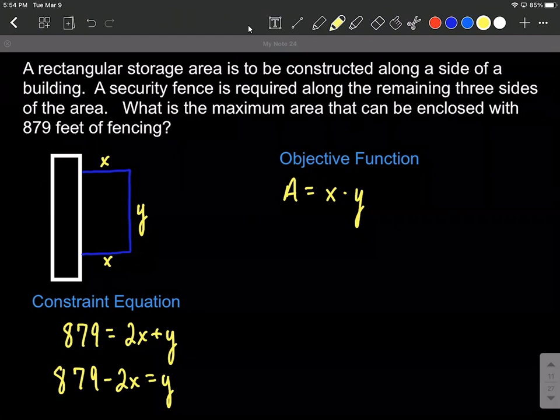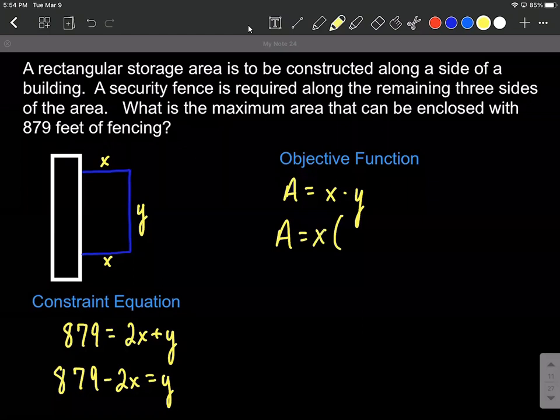Now we're going to substitute into our objective function. We're going to replace the Y over here with 879 minus two X.